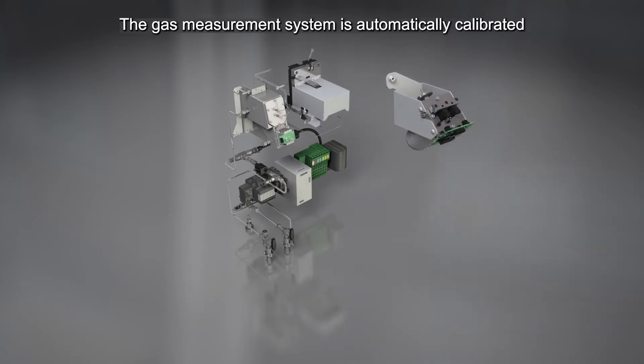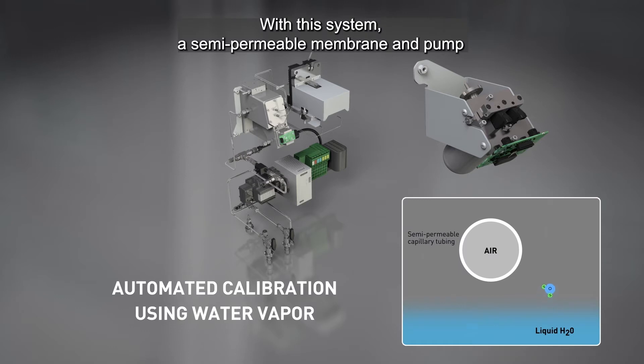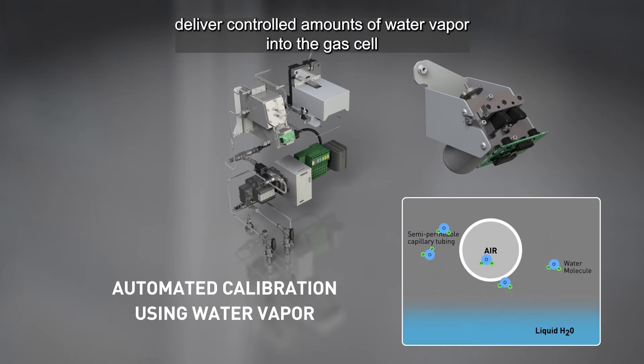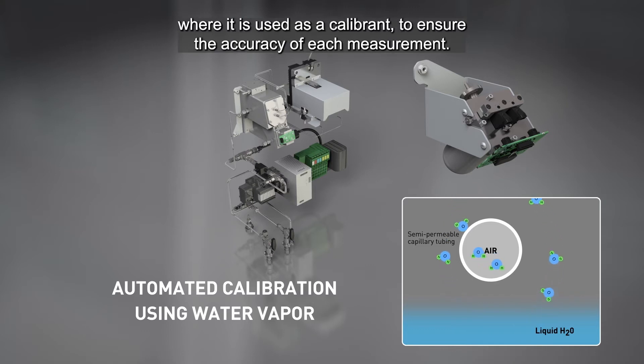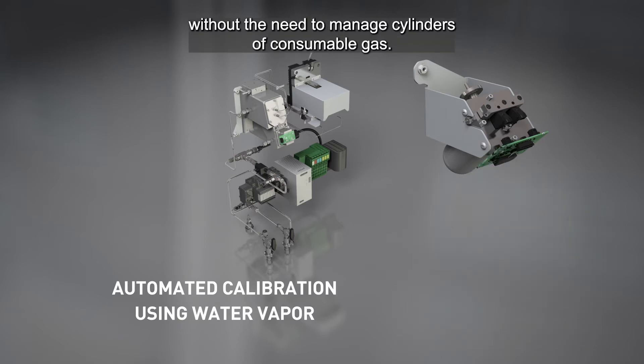The gas measurement system is automatically calibrated using a patented onboard calibration system. With this system, a semi-permeable membrane and pump water vapor itself deliver controlled amounts of water vapor into the gas cell, where it is used as a calibrant to ensure the accuracy of each measurement. The Callisto R9 auto calibration method ensures long-term DGA accuracy without the need to manage cylinders of consumable gas.